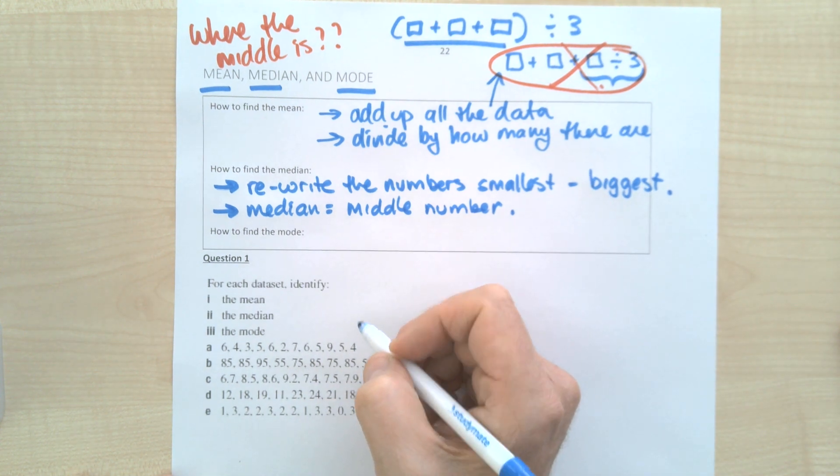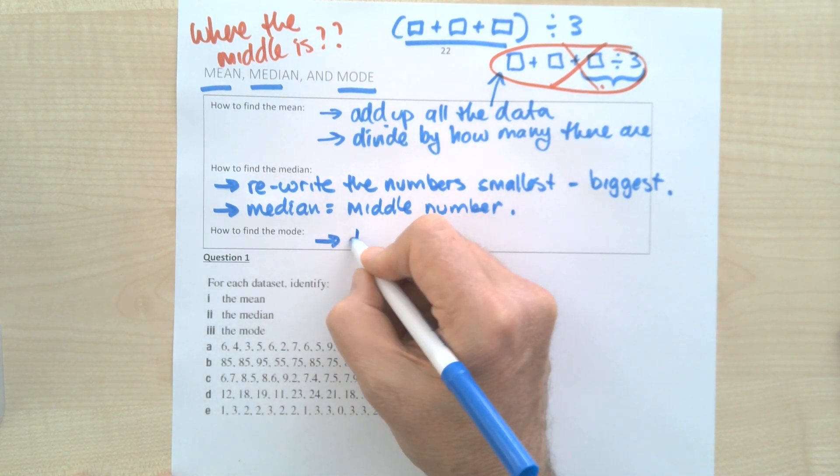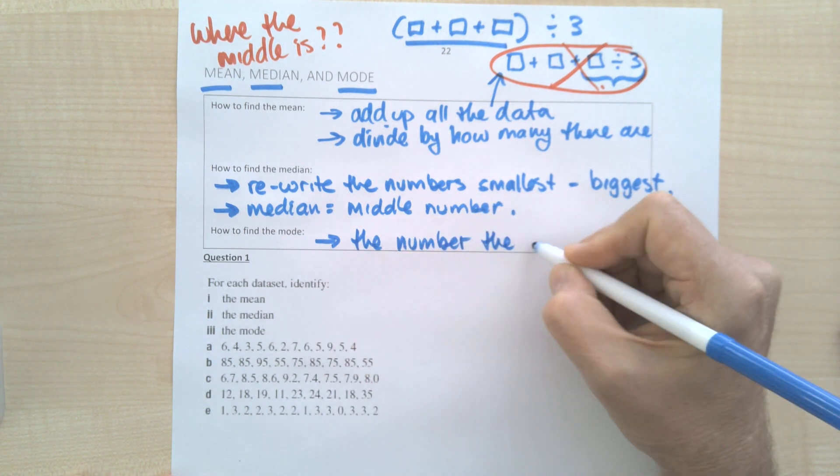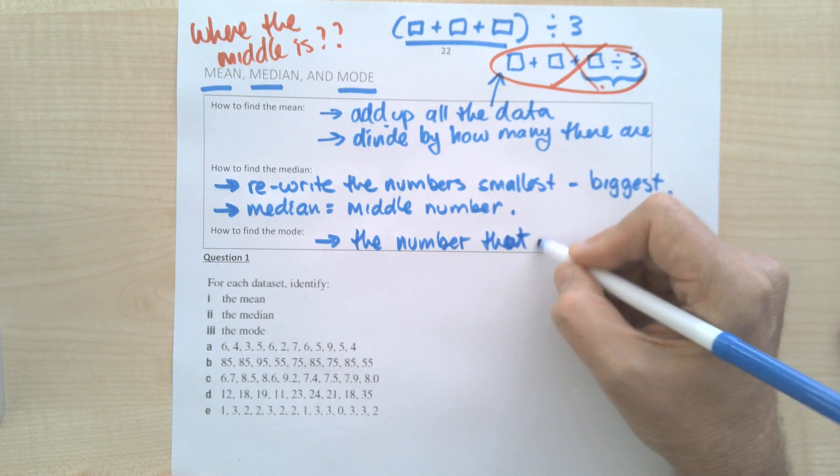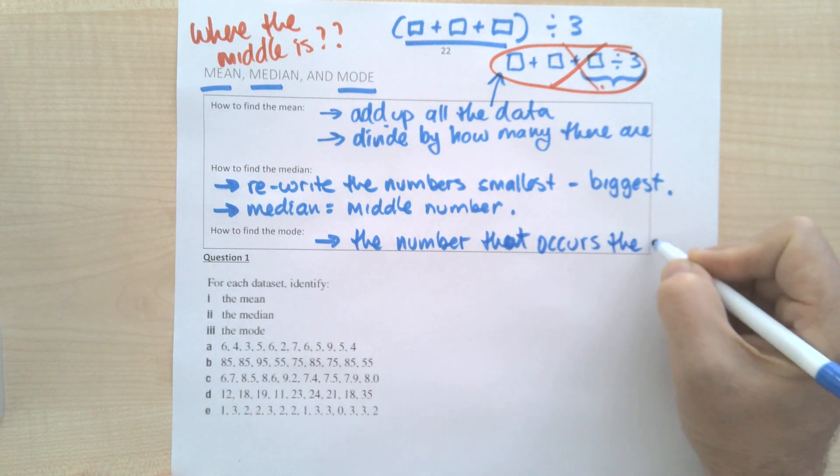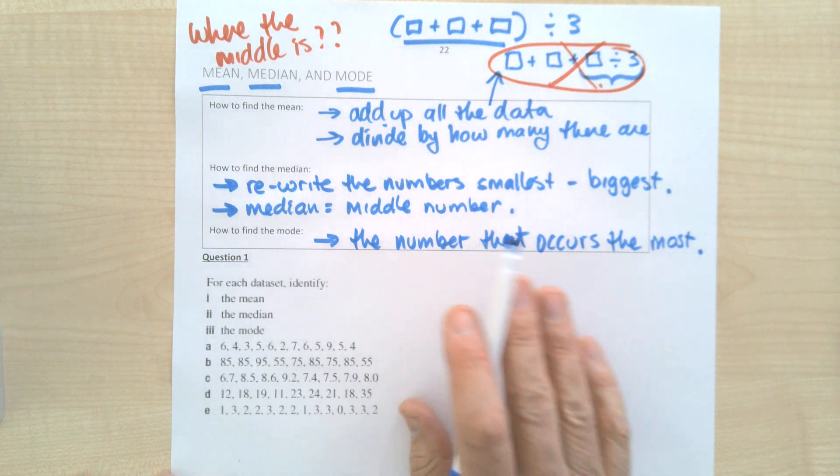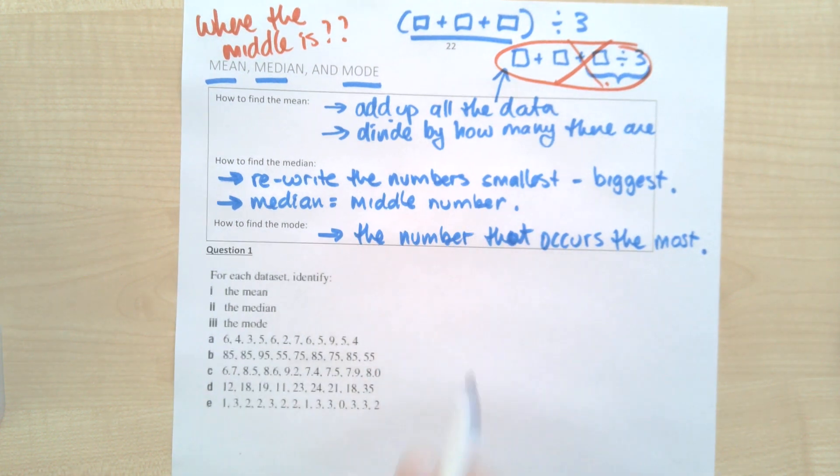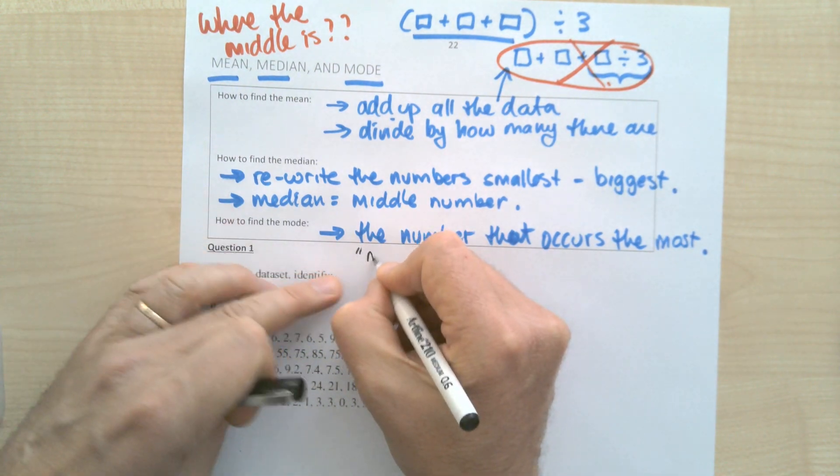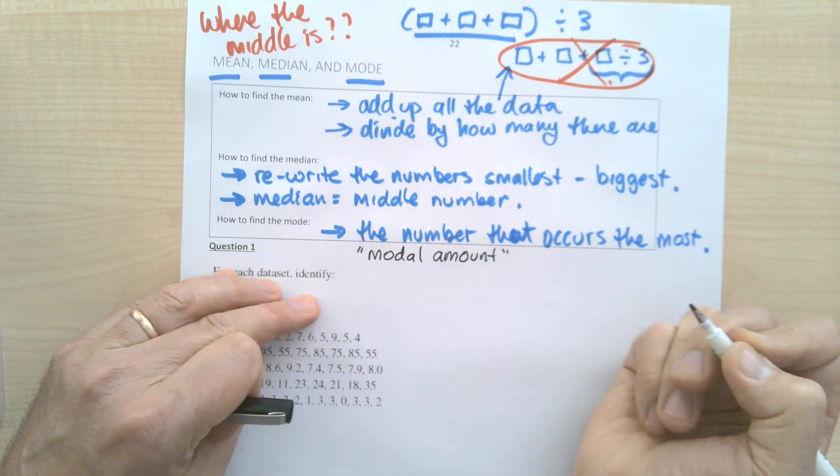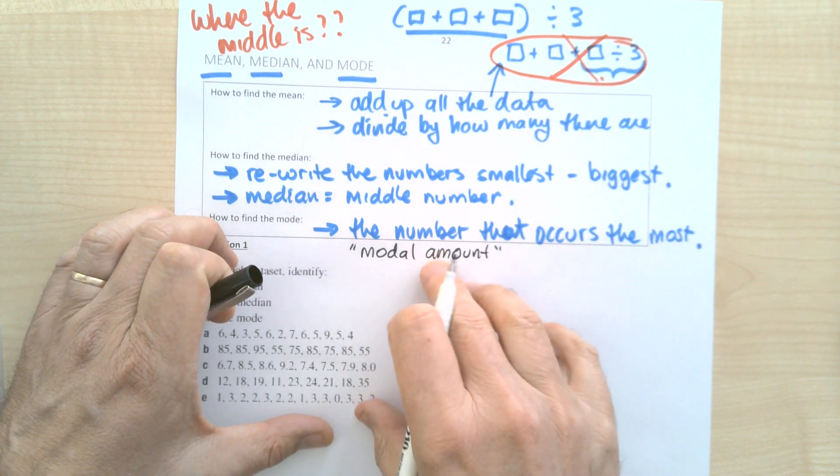How do you find the mode? The mode is the easiest one of all. The mode is simply the number that occurs the most. You don't have to do any math, you've just got to read it off. Now here's the thing: you can actually be asked what is the modal amount, which means what is the mode.